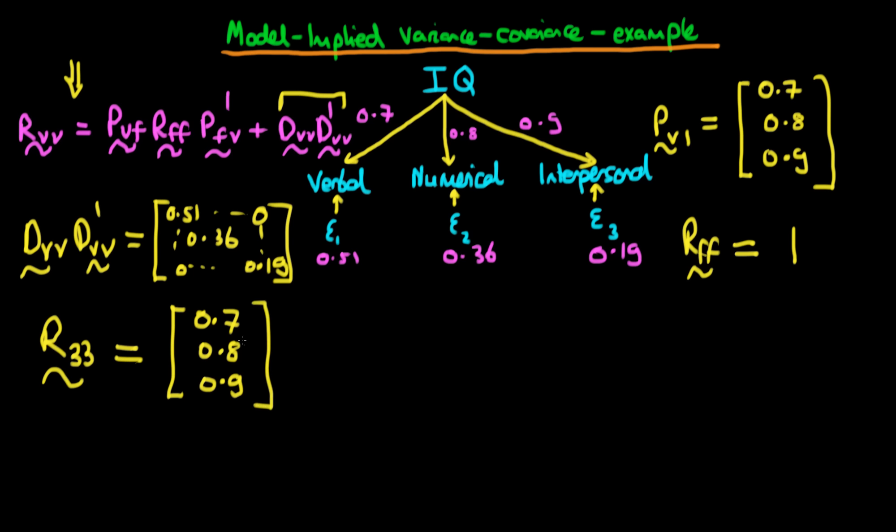Then it's times RFF, which is just 1, so we can just forget about that. And then finally, times 0.7, 0.8, and 0.9, which is the transpose of our original weight matrix.